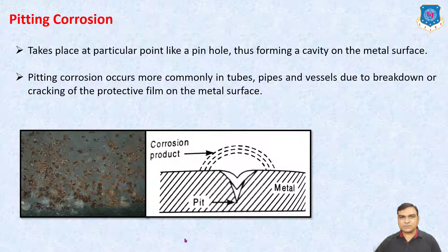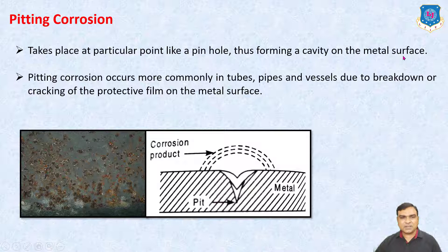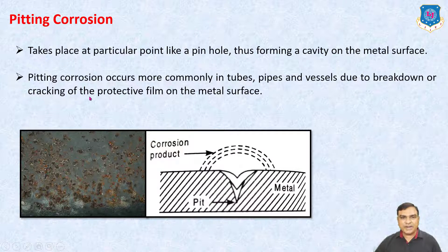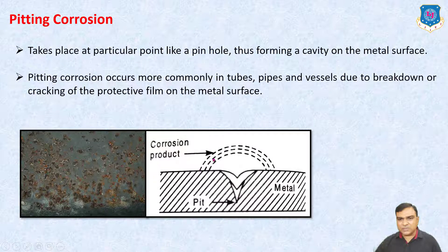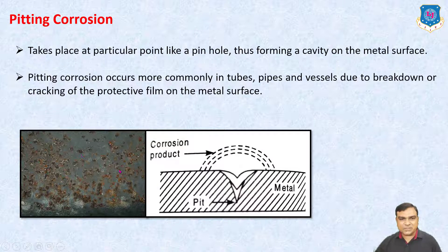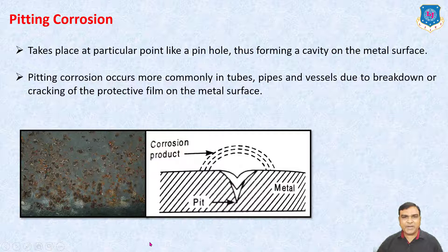Pitting Corrosion. This type of corrosion takes place at a particular point like a pinhole, thus forming a cavity on the metal surface. Pitting Corrosion occurs more commonly in tubes, pipes and vessels due to breakdown or cracking of the protective film on the metal surface. If there is one crack in the metal, the corrosion takes place at that particular crack or different dots and cavities. This type of corrosion is known as Pitting Corrosion.